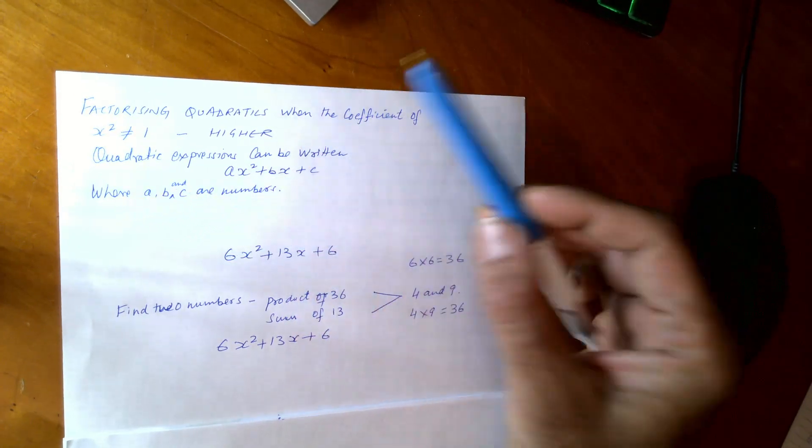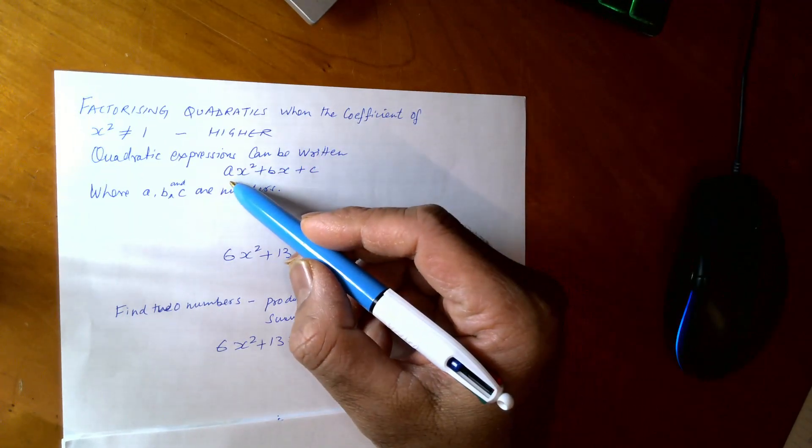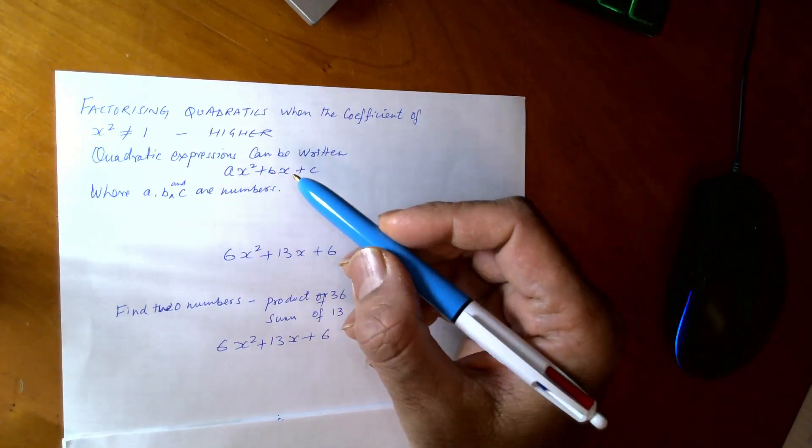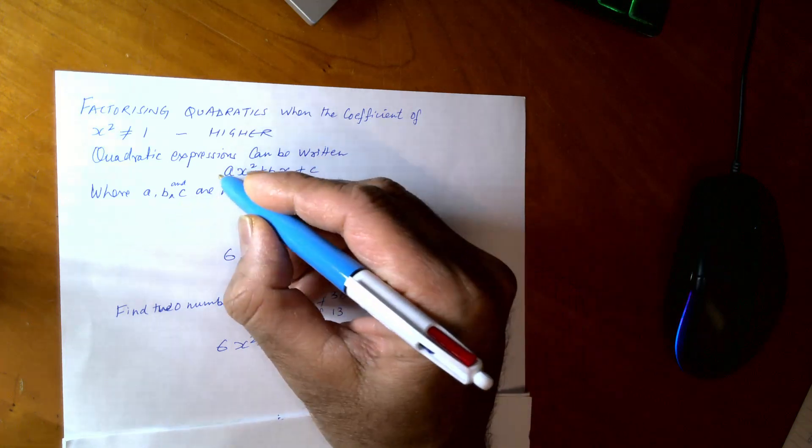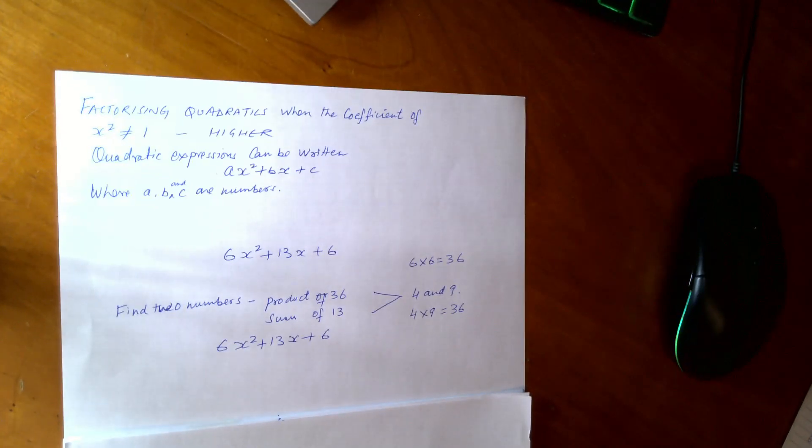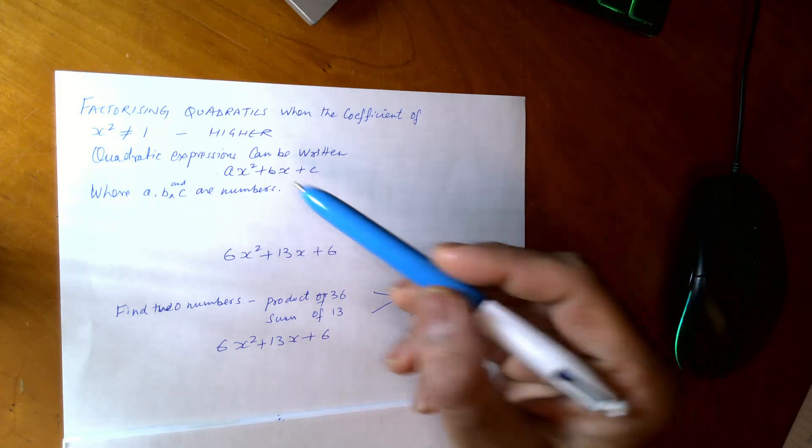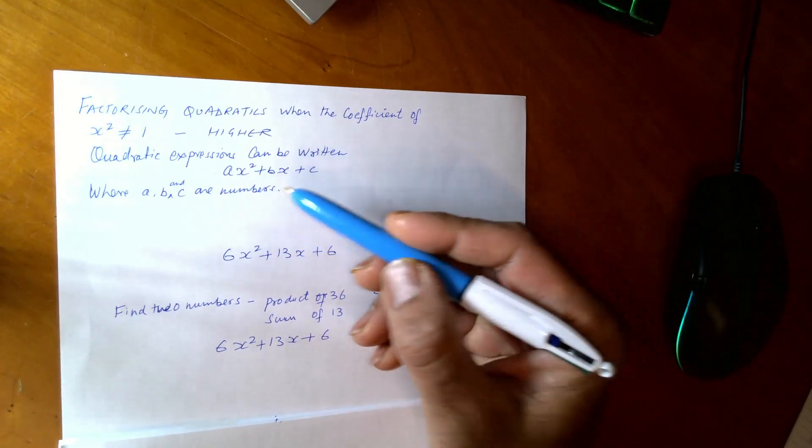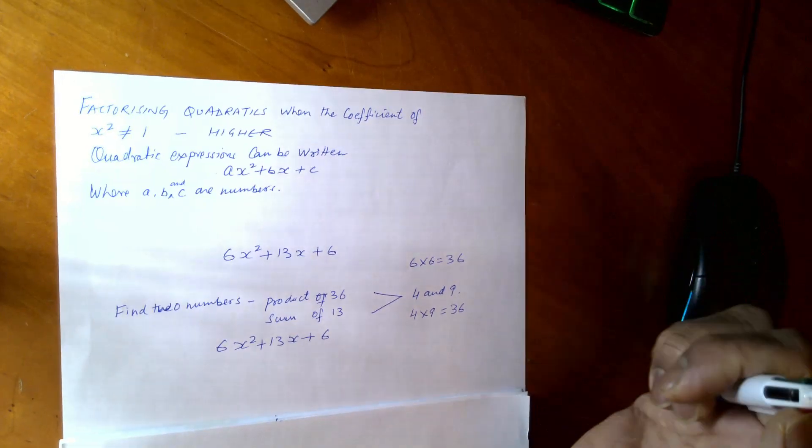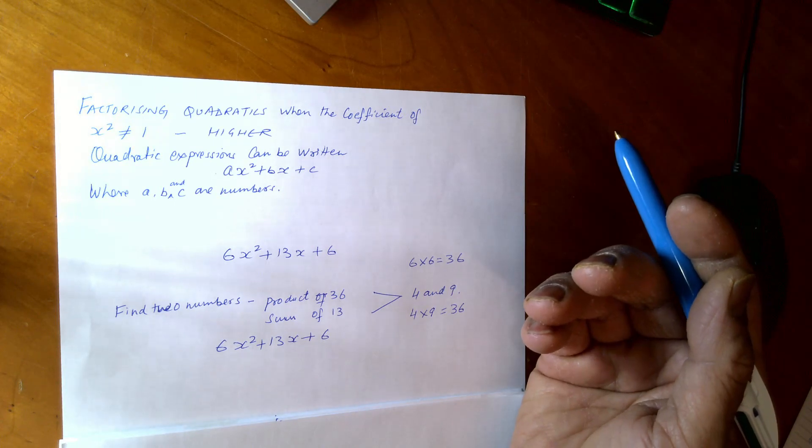In quadratic equations, it can be written as ax squared plus bx plus c, where a, b and c are numbers. a is called the coefficient of x squared, b is the coefficient of x, and c is constant, which is like a number.